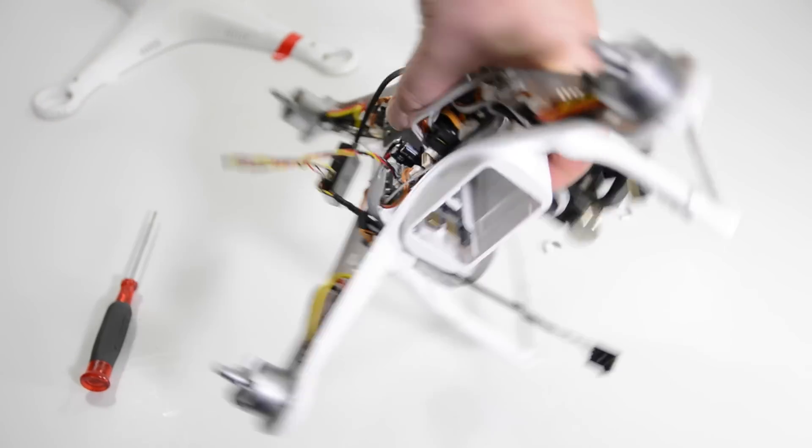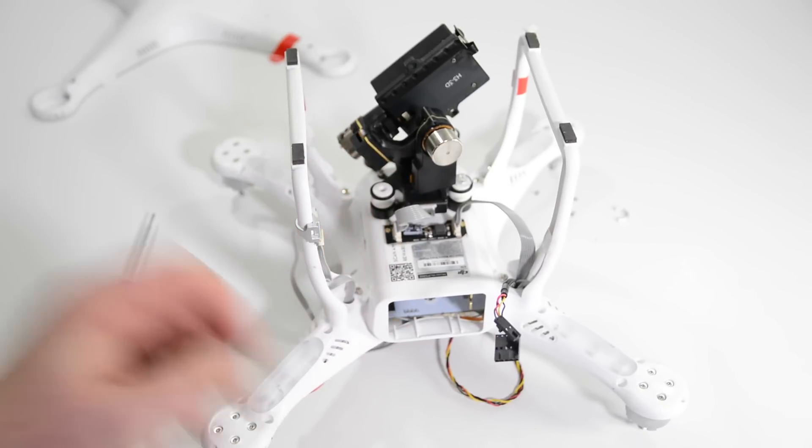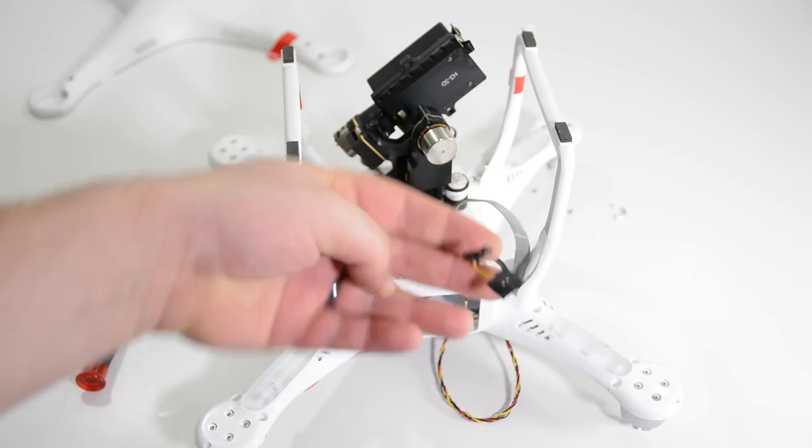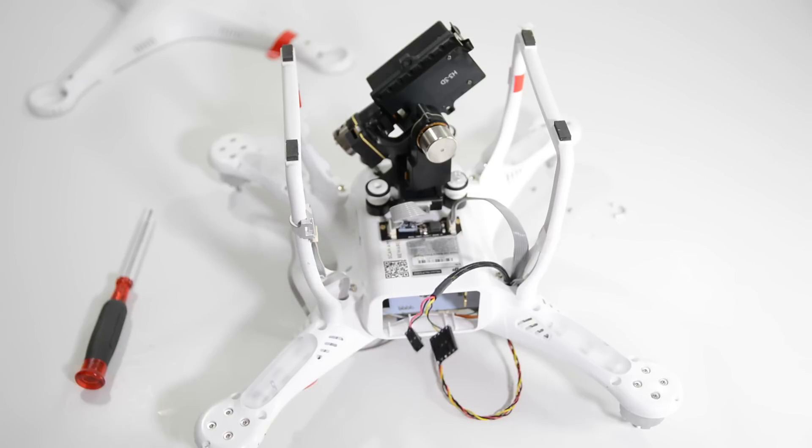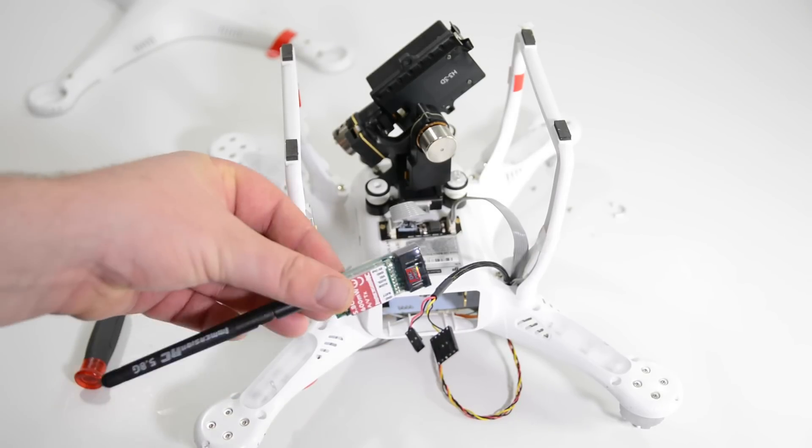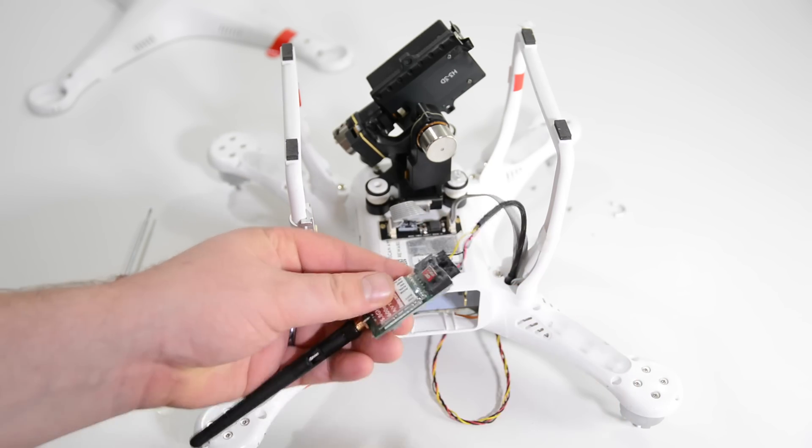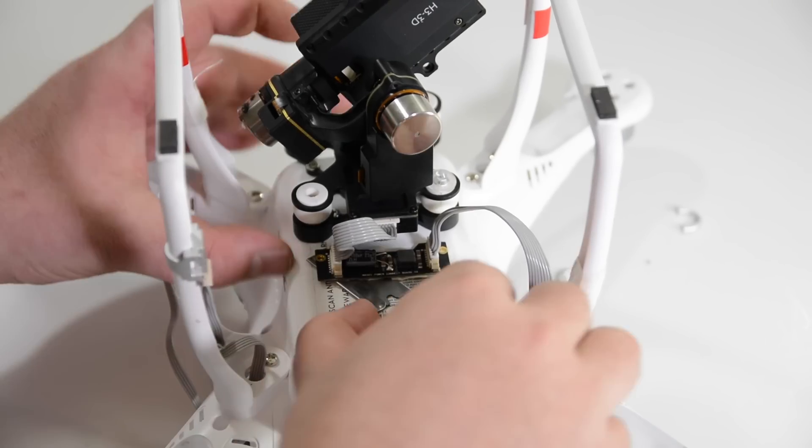Now we'll need to install the AV transmitter on the bottom of the quadcopter. Now when you're installing this I do like to use double sided sticky tape and you will need to make sure you have room to put the battery in and take the battery out so you don't want to mount this in the middle you'll want to mount this off to the side.